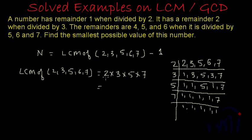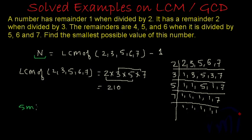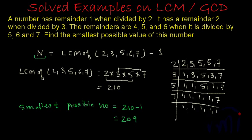So the LCM will actually be: 5 times 2 are 10, and 7 times 3 are 21, giving us 210. We have got the LCM.